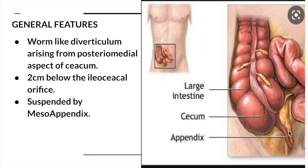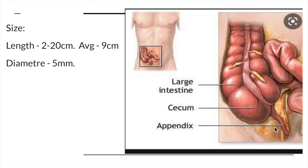This triangular peritoneal fold is called the mesoappendix. The appendix is a worm-like diverticulum arising from the posteromedial aspect of the cecum. Both the ileum and the appendix open at the posteromedial wall of the cecum, with the appendix opening exactly two centimeters below the ileocecal orifice. It is suspended by the mesoappendix. The length ranges from two to twenty centimeters, with an average of nine centimeters, and the diameter is five to nine millimeters. Usually it is very narrow and its lumen is obliterated up to mid-adult life.